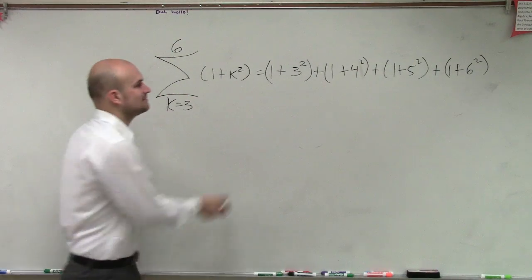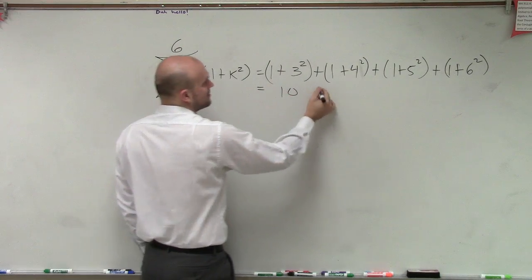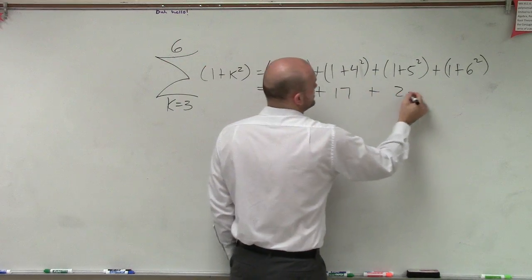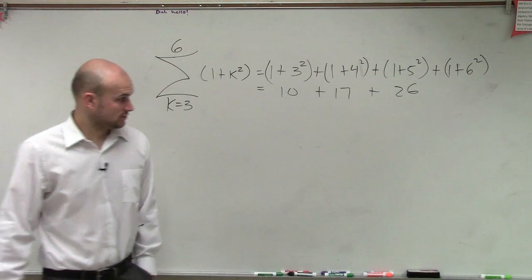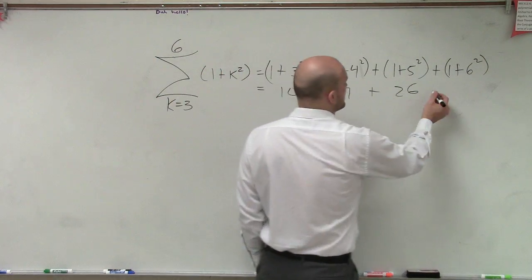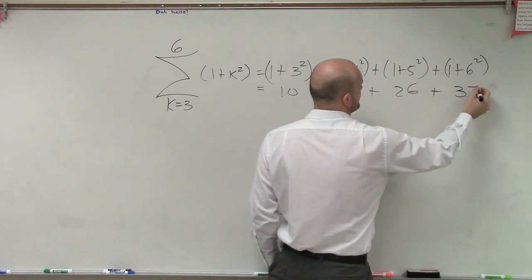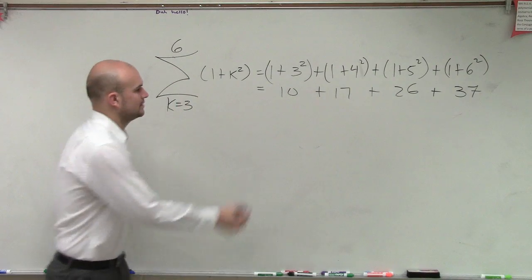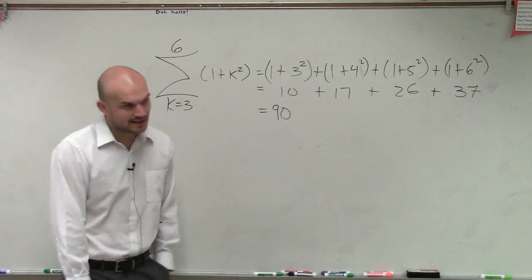Now we just need to simplify this. So this is 9, so it's going to be 10 plus 17 plus 26 plus 37, which is now going to equal 90.